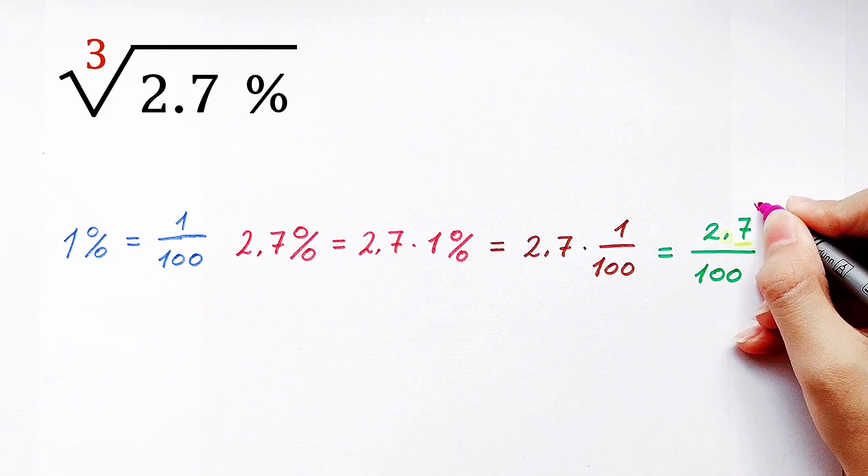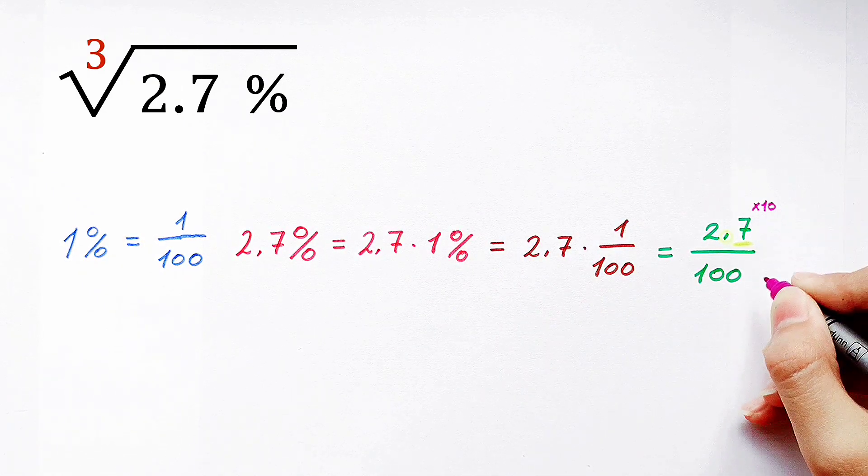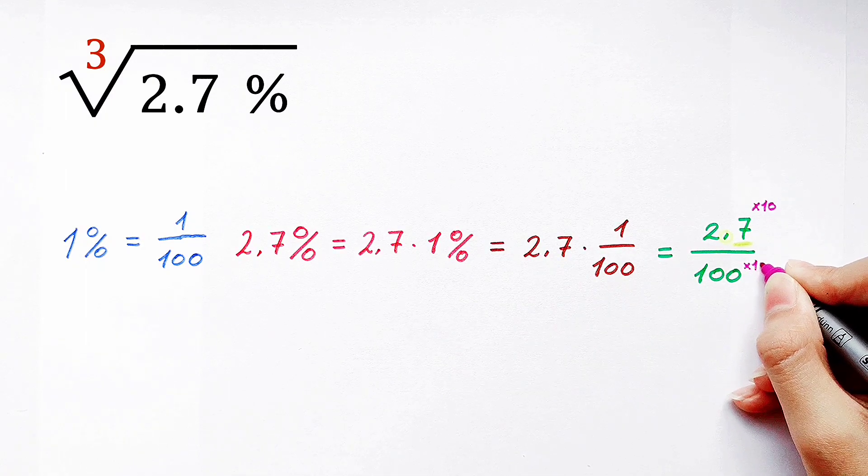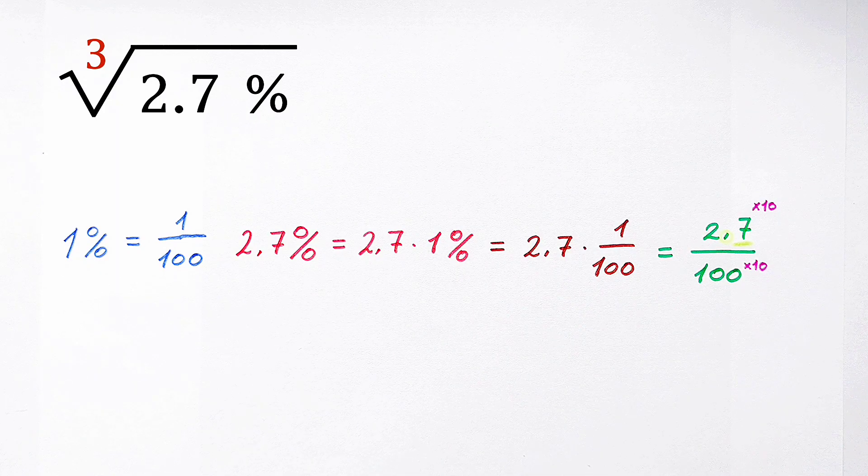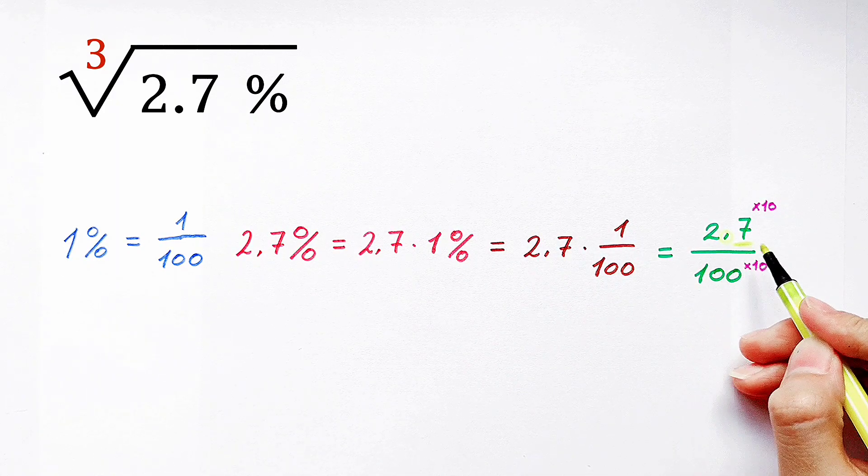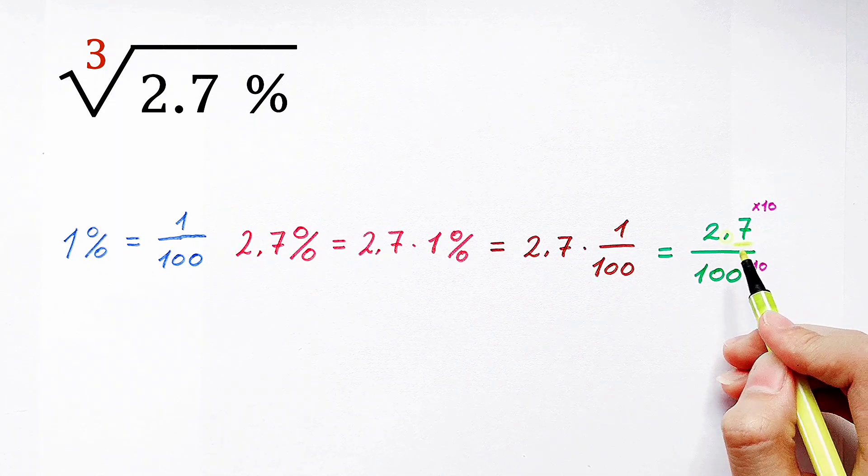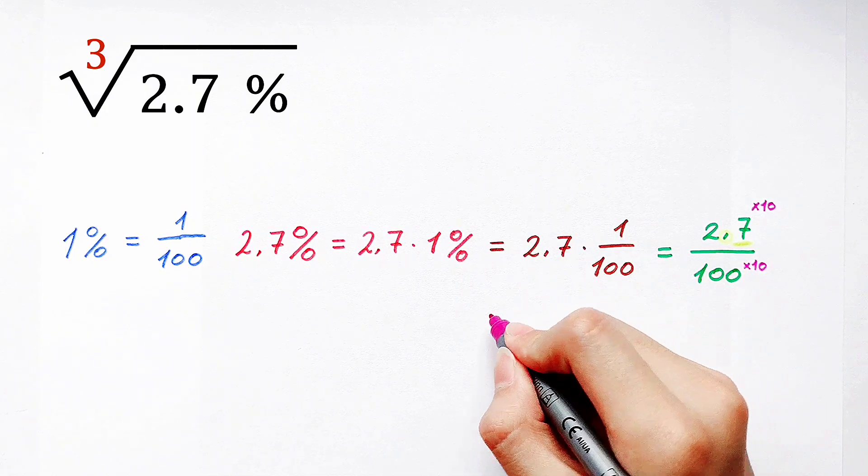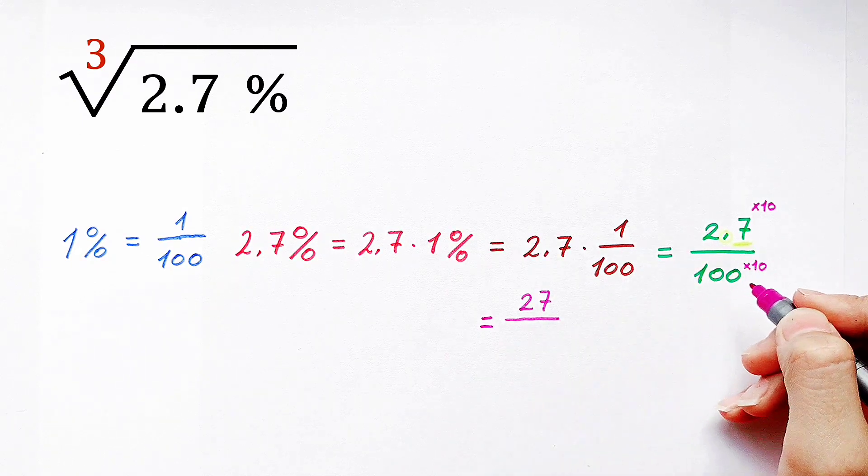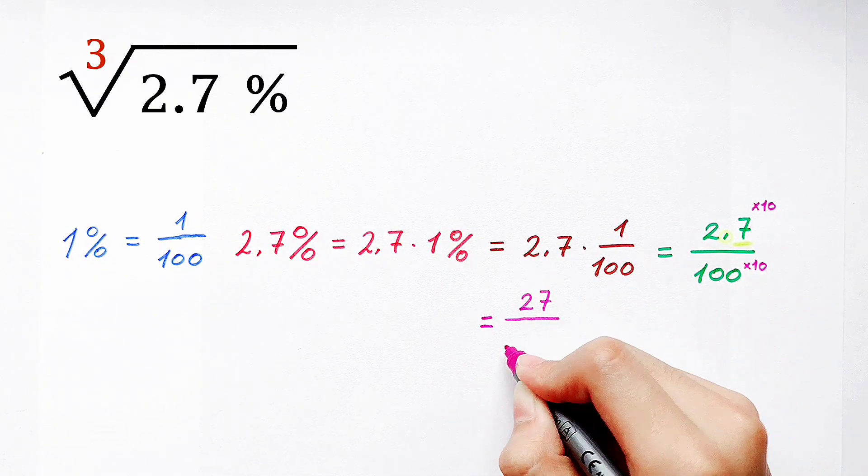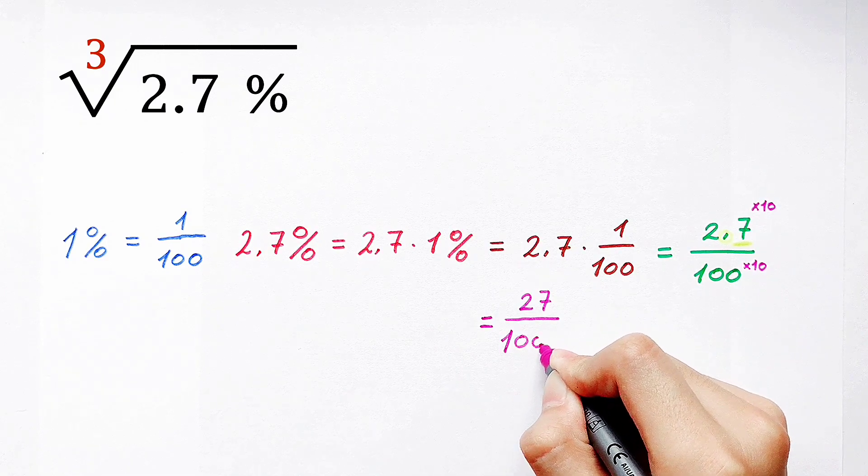We have multiplied by 10 on the numerator and also on the denominator. So on the numerator it appears 2.7 times 10, which is 27. And on the denominator 100 times 10, which is 1,000.